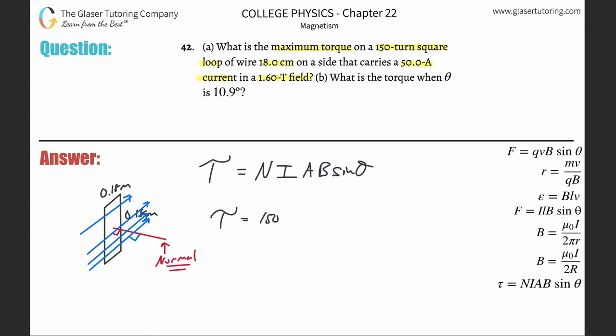The number of turns is 150, the current there is going to be 50 as they told us, the area it's a square so it's 0.18 squared, the magnetic field strength is 1.6 tesla, and then this would be the sine of the 90. Plug that all into the calculator and what do you get? So you get 150 times 50 times 0.18 squared times 1.6 times sine of 90 and this works out to be about 389. Considering the units and torque is in newton meters, so that's then the value. That's letter a.